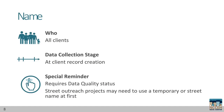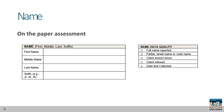The data quality status must be completed according to the response to name, and many reports rely on this response. Street outreach projects may need to build trust over time to get the full name of the client, so staff can use a temporary or street name and add the full name later. The location to record name and name data quality is at the top of your project start paper assessment. Make sure that you are checking which data quality status applies.